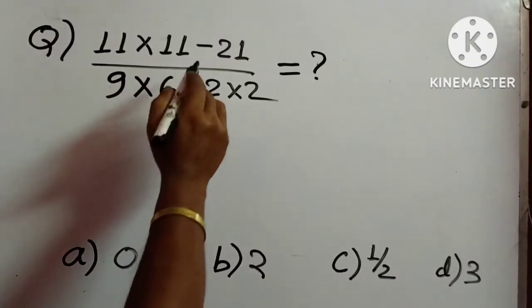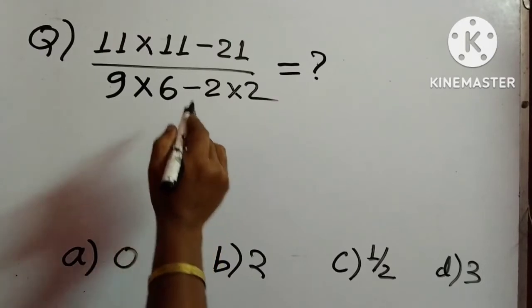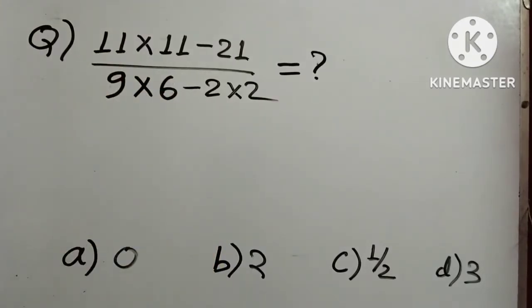In this question, 11 into 11 minus 21 by 9 into 6 minus 2 into 2. We have to solve this one and the four options are given.